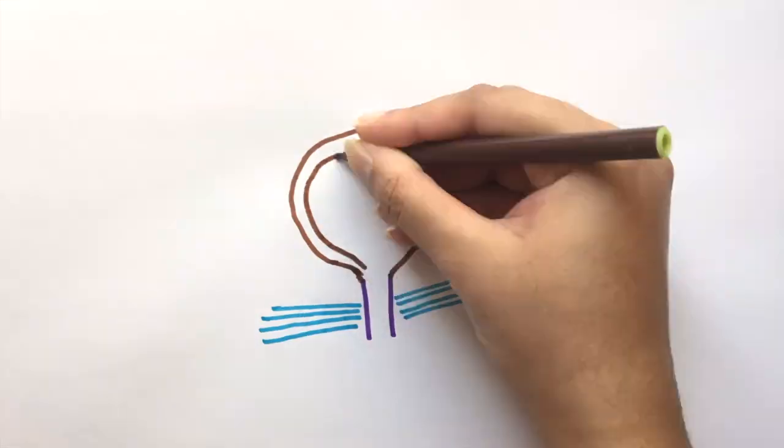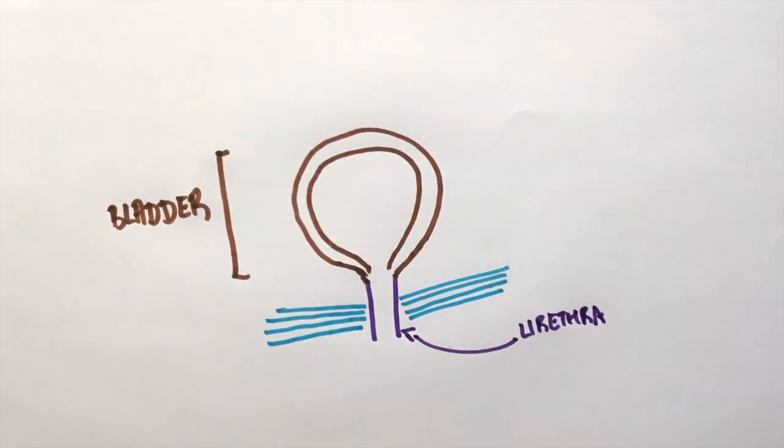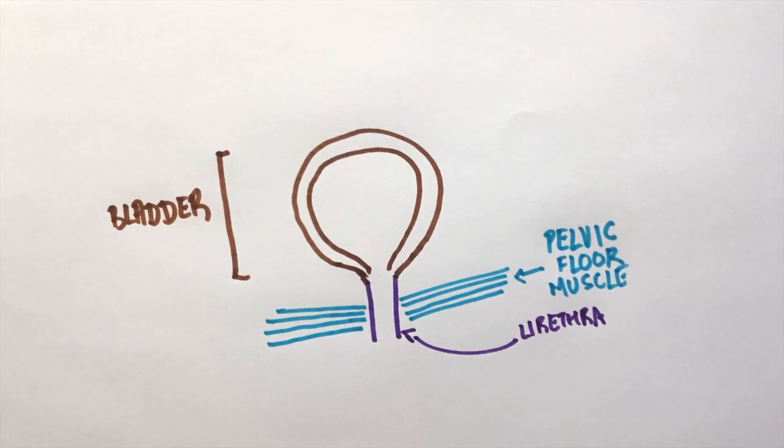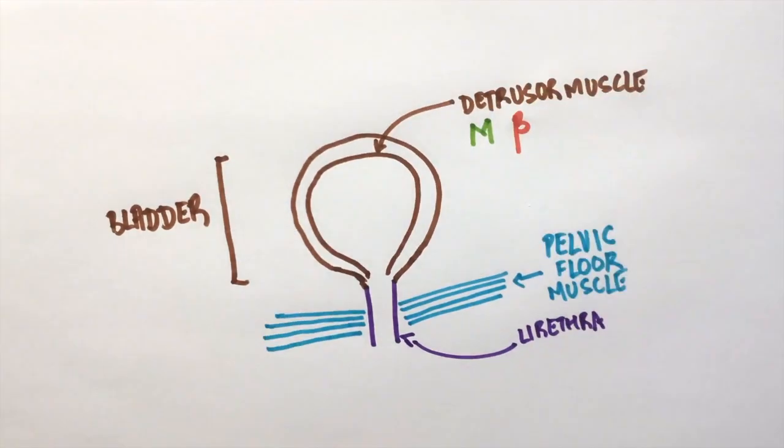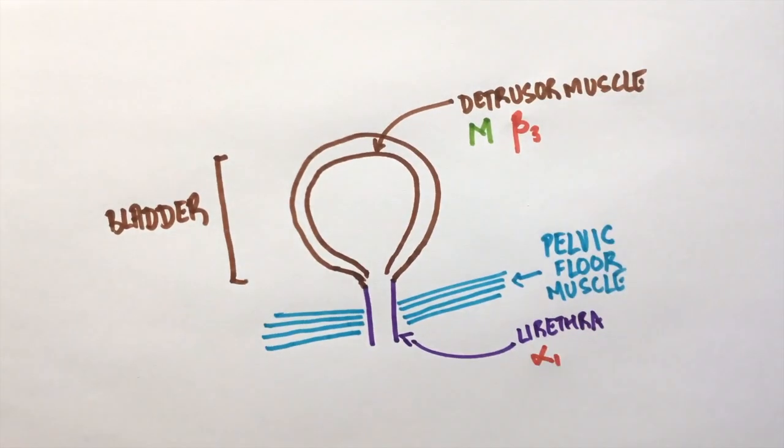This is the urinary bladder and this is the urethra. These are the muscles of the pelvic floor. The bladder has smooth muscles which have muscarinic receptors and beta receptors. The urethra has alpha-1 receptors.